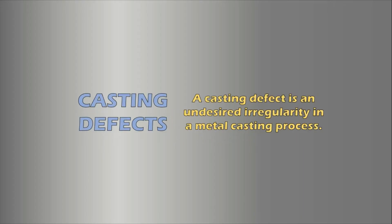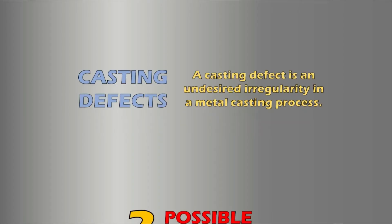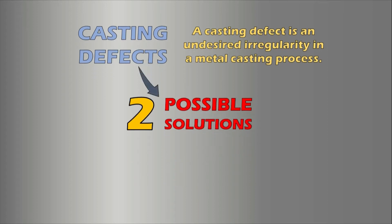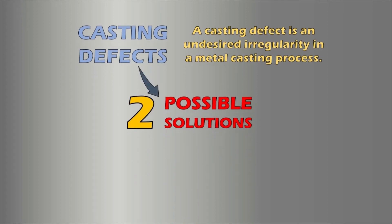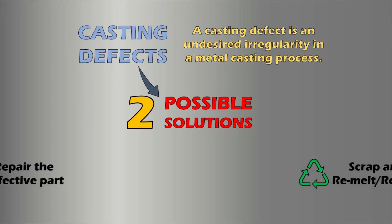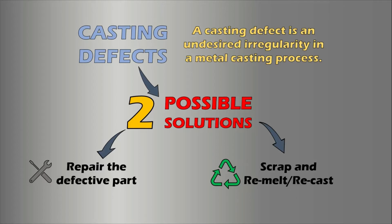A casting defect is an undesired irregularity in a metal casting process. Some defects can be tolerated while others can be repaired; otherwise they must be eliminated. There are a lot of things that can go wrong with a casting, but it can be difficult to tell from the results what caused the problem. If the produced casting part is defective but can be tolerated, then it is machined as required to make the defective part usable.